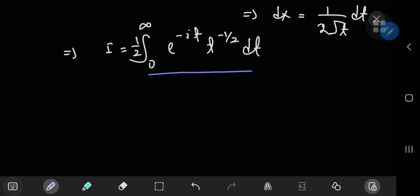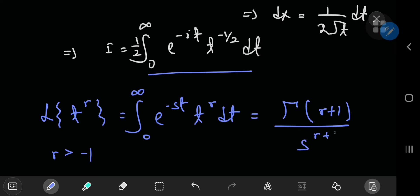Now, this integral is actually pretty familiar. If you look up a table on Laplace transforms, then the Laplace transform of t^r, where r is greater than negative one, equals the integral from zero to infinity of e^(-st) times t^r dt equals the gamma function of r plus one divided by s to the r plus one.